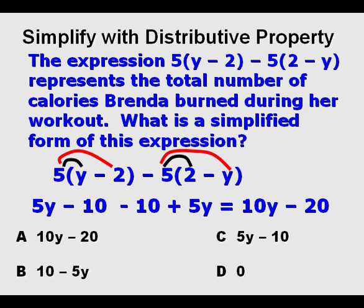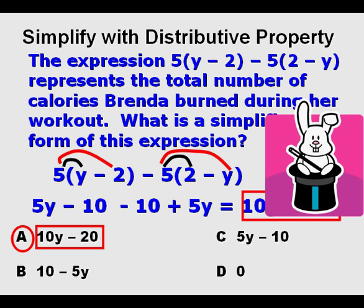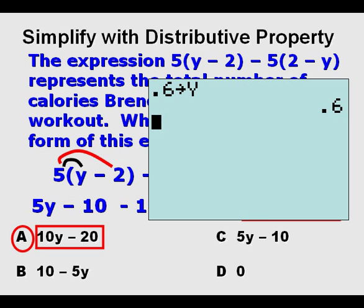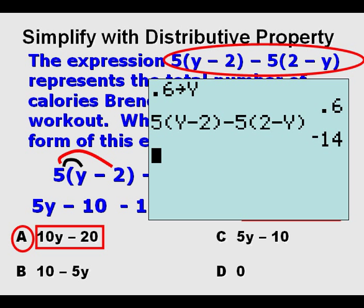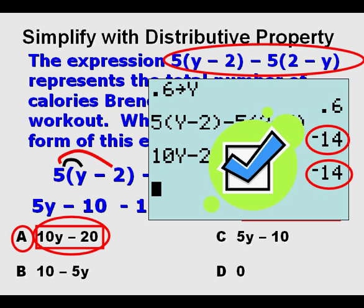And where is that answer visible? Well, it's a. So we choose a. But we're also going to use our test taking trick to check it. So we store a value for y. In this case it stored 0.6. And enter this expression above and get as a value negative 14. And we're going to enter the expression for a with 10y minus 20. And we also get negative 14, which is a check. So now we're sure we got it right.